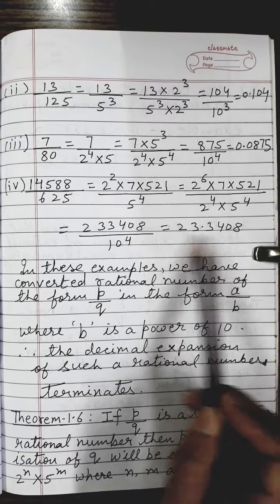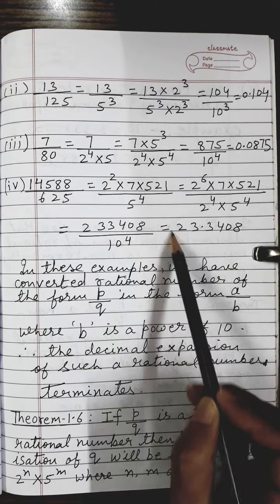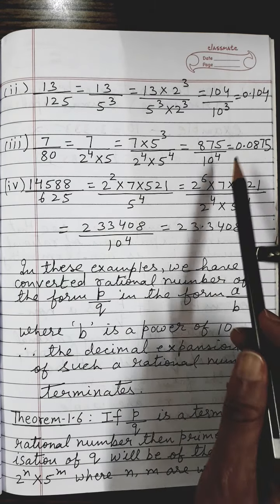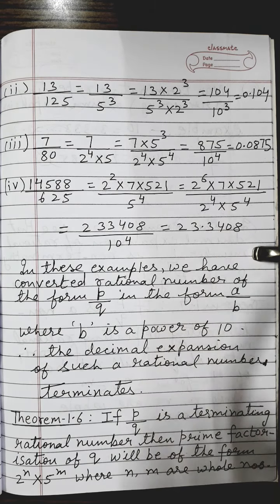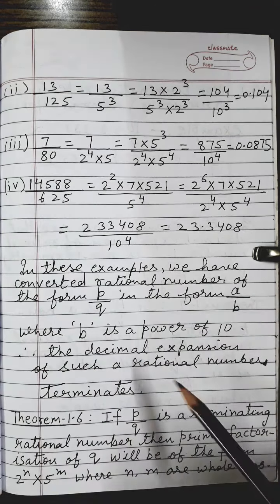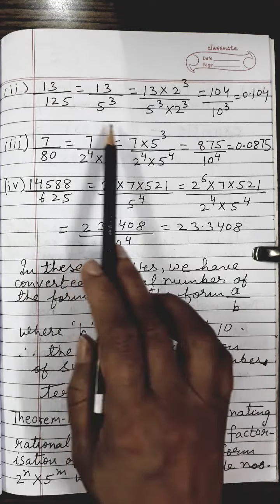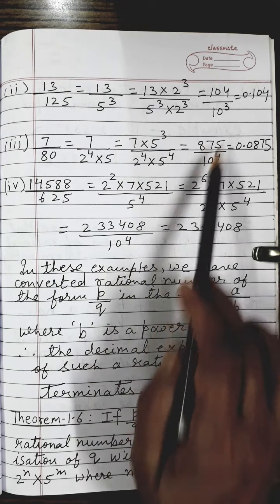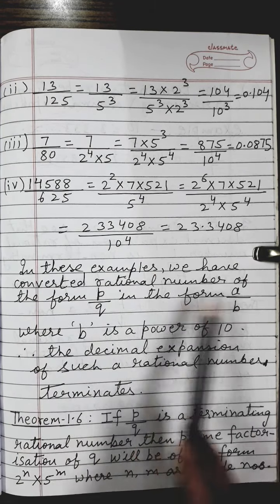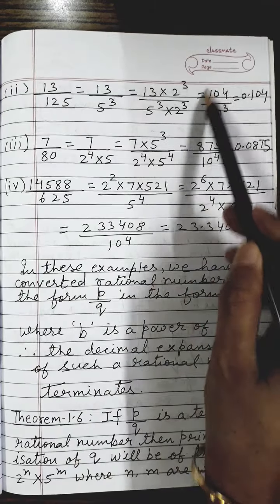So the answer is 23.3408. This is called the decimal expansion of this rational number 14588 upon 625. In all these examples, the remainder will come out to be 0 — even if you do it by long division. Without doing long division, we are following the method of making the denominator as a power of 10. We have converted the rational number P upon Q into the form A upon B, where B is the power of 10.